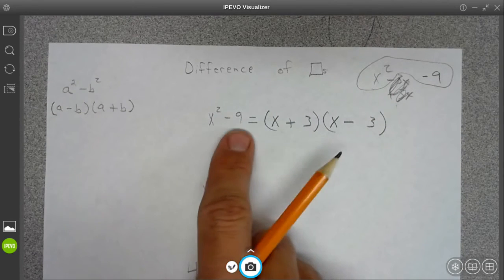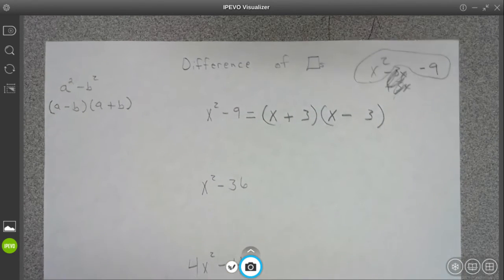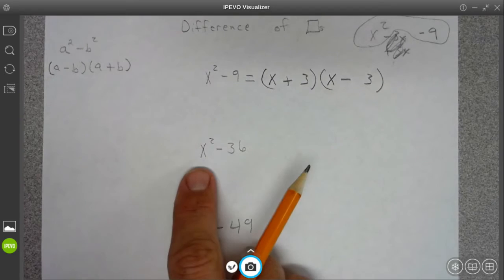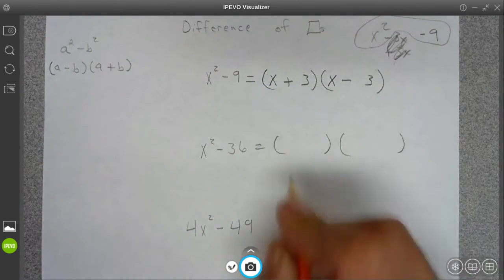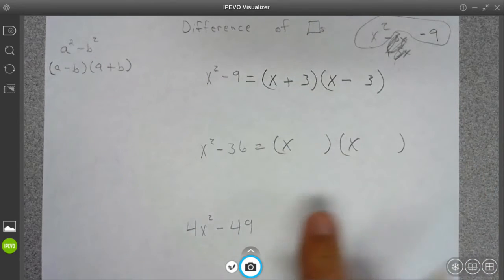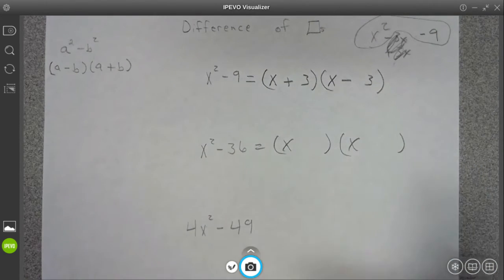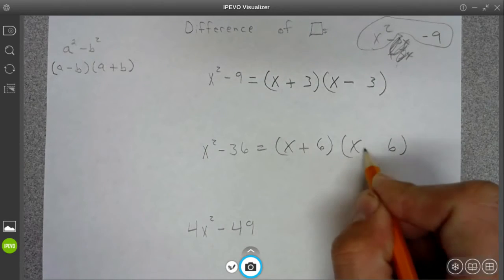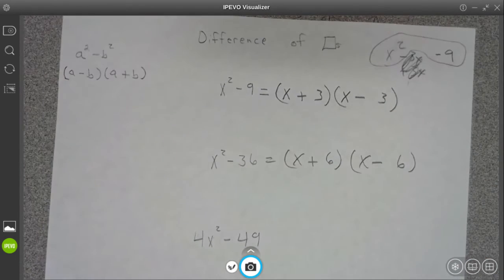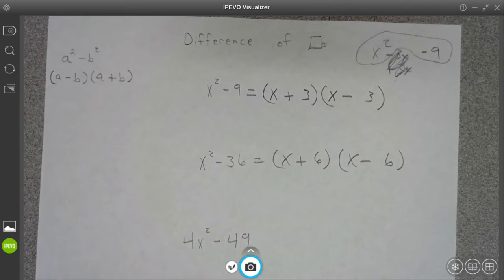You have to think of the square root of these pieces. So for x squared minus 36, that's x and x, and square root of 36 is 6. One's plus, one's minus. It's really easy to apply, but knowing to look out for it, that's the trick.